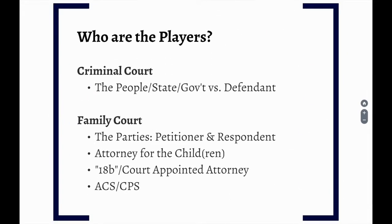Now that we understand the types of cases and the different courts that can hear them, who are the players? In a criminal case, the government brings a case against a defendant after a crime has been committed — for example, the People versus OJ Simpson. In family court, the parties are called the petitioner and the respondent. The petitioner is the person who starts the proceeding by filing the petition, and the respondent is the person the proceeding is against. For example, Ryan and Taylor are married. Ryan throws a glass and hits Taylor. Taylor files a family offense petition against Ryan — Taylor is the petitioner, and Ryan is the respondent.